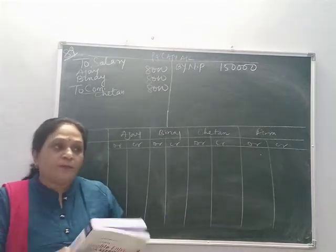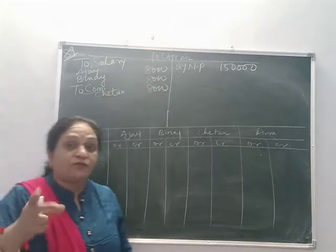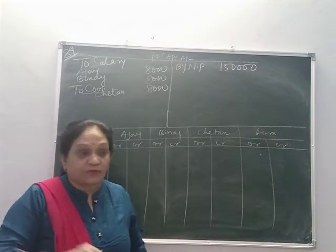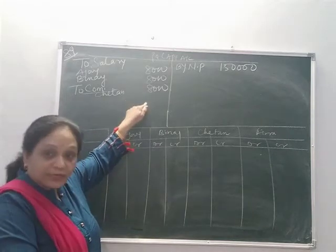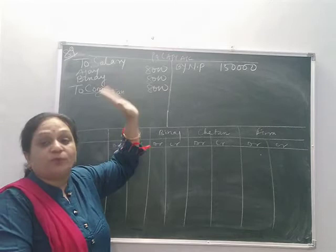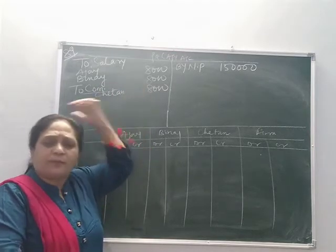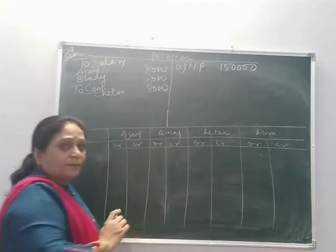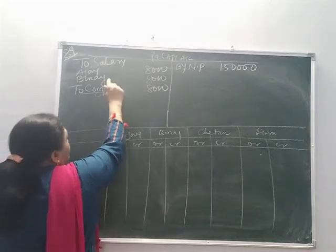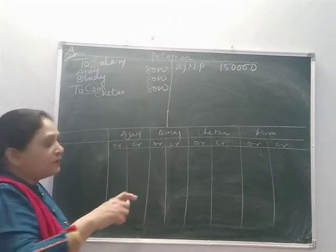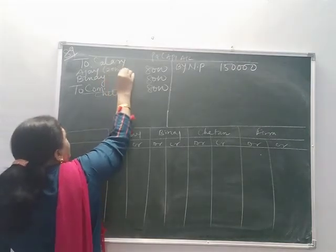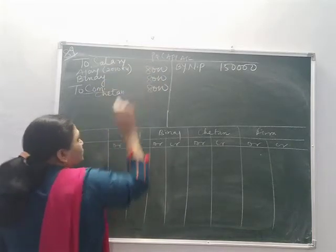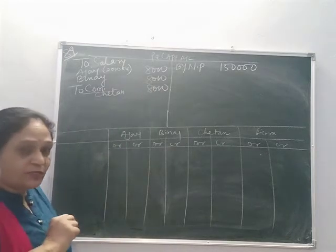The profit is 1,50,000. This question combines guarantee and past adjustment. First we prepare the P&L appropriation account to calculate the actual profit. Net profit is 1,50,000. Salary not yet provided: 2,000 per quarter, so 2,000 into 4 equals 8,000 to Ajay and 8,000 to Binay. Commission to Chetan is 8,000. After providing these, we check whether the guarantee for Binay is fulfilled.